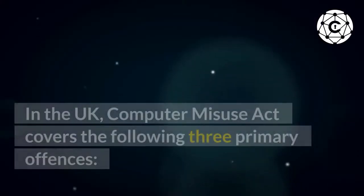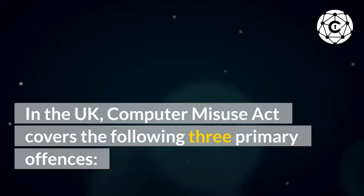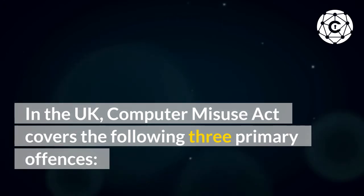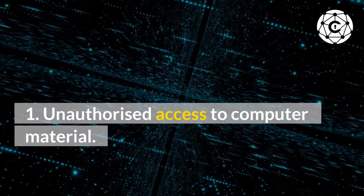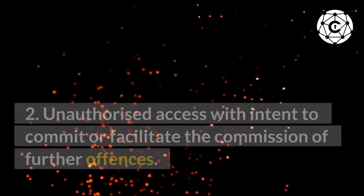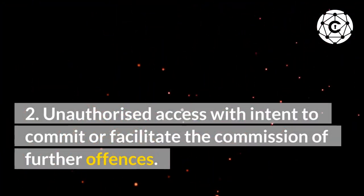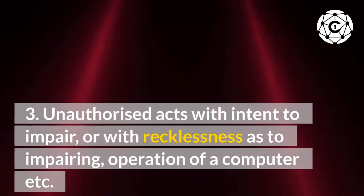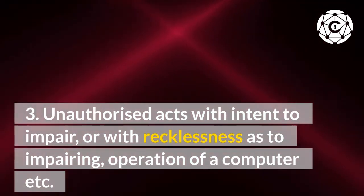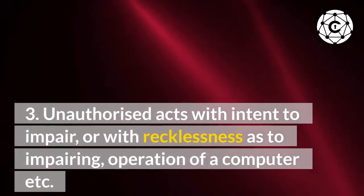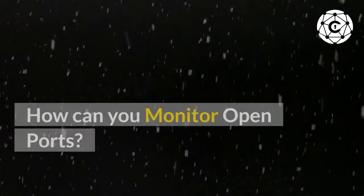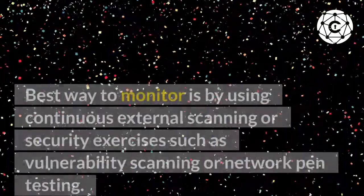In the UK, the Computer Misuse Act covers three primary offenses: one, unauthorized access to computer material; two, unauthorized access with intent to commit or facilitate the commission of further offenses; three, unauthorized acts with intent to impair, or with recklessness as to impairing, the operation of a computer.